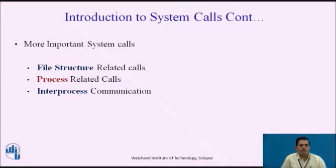There are different categories of system calls. First, file structure related system calls. The file structure related system calls available in the Unix system will let you create, open, and close files; read and write files; remove files; get information about files; check the accessibility of files; change protection of files; change owner and group of files; and control devices.